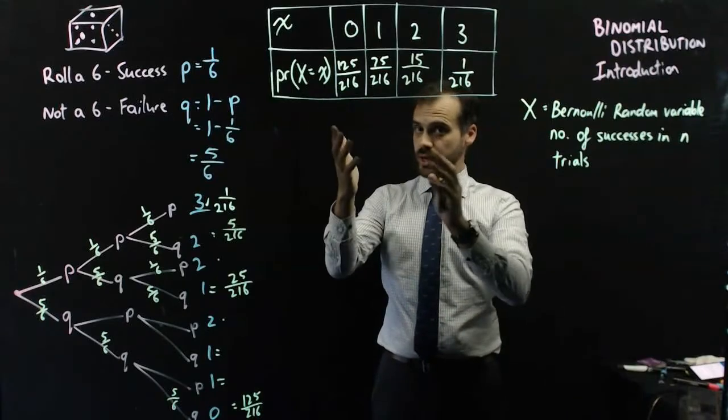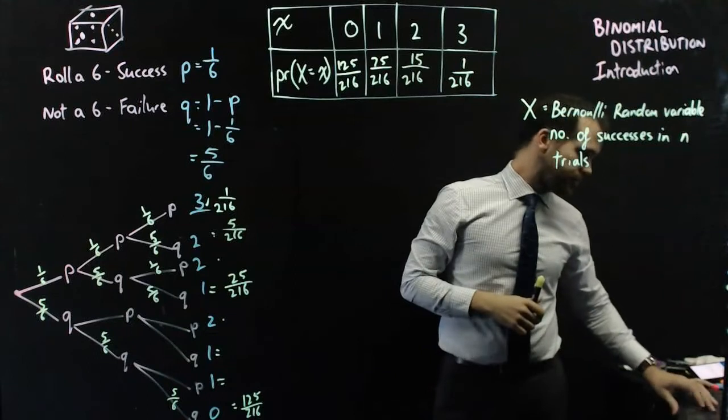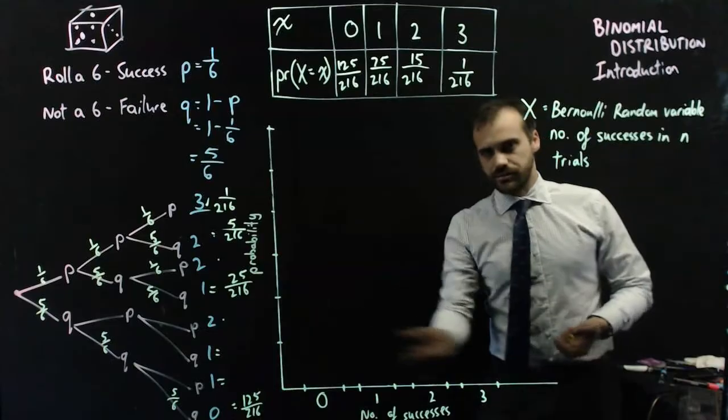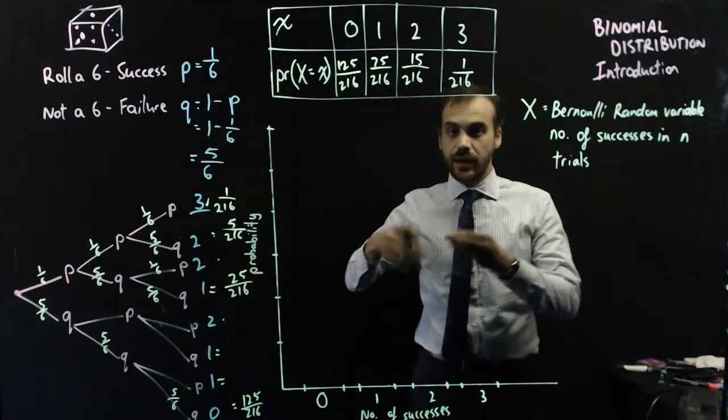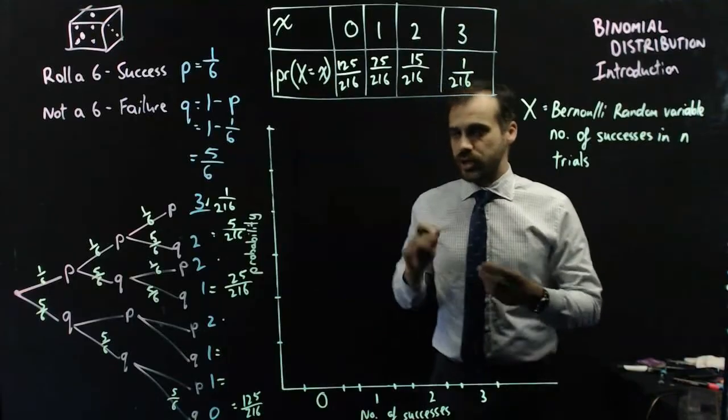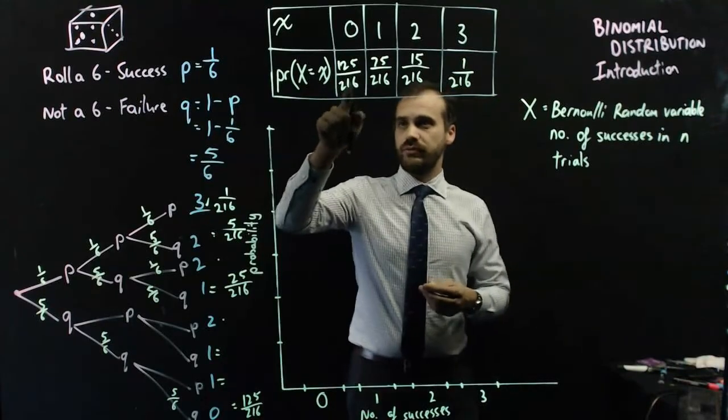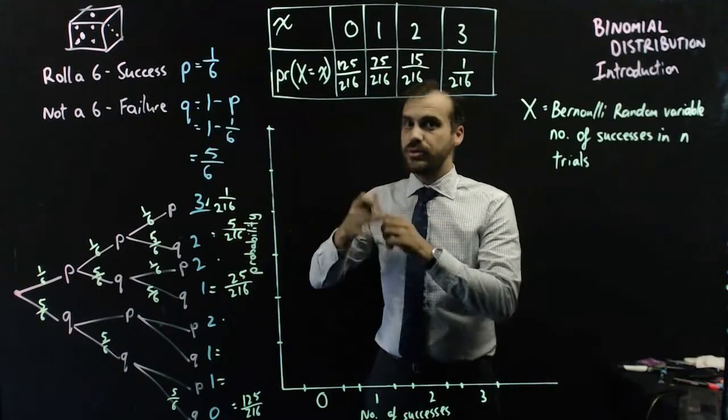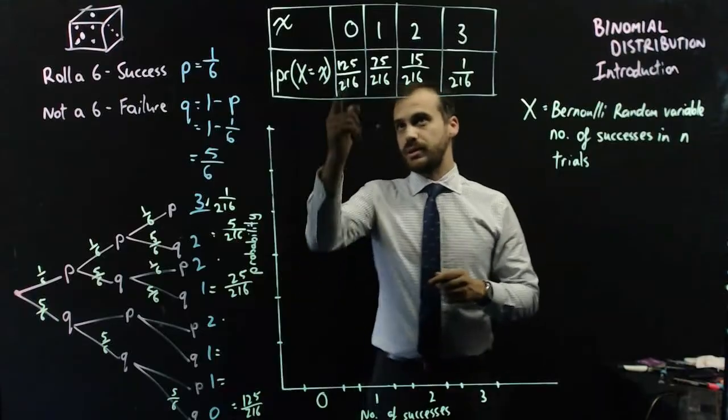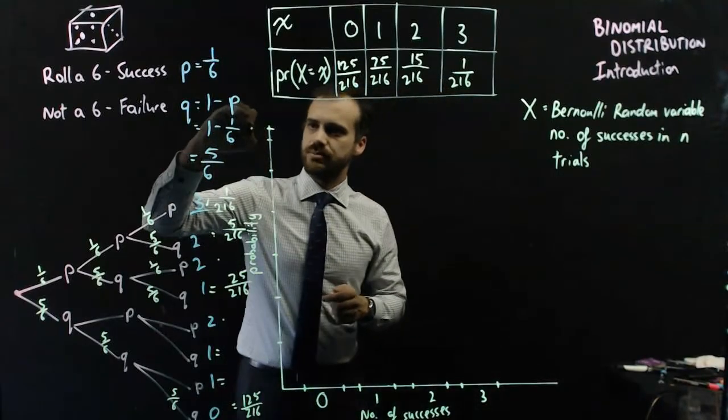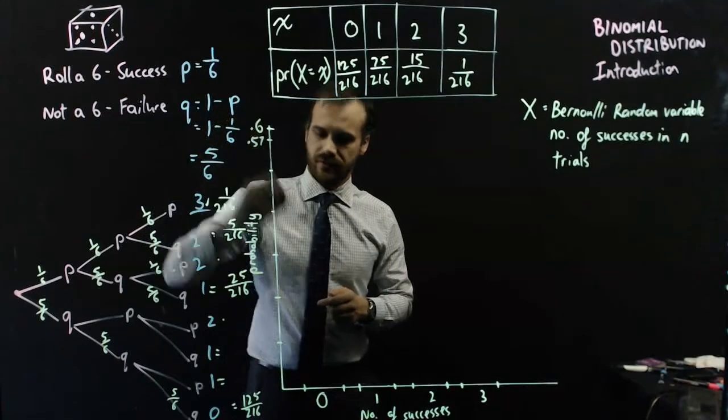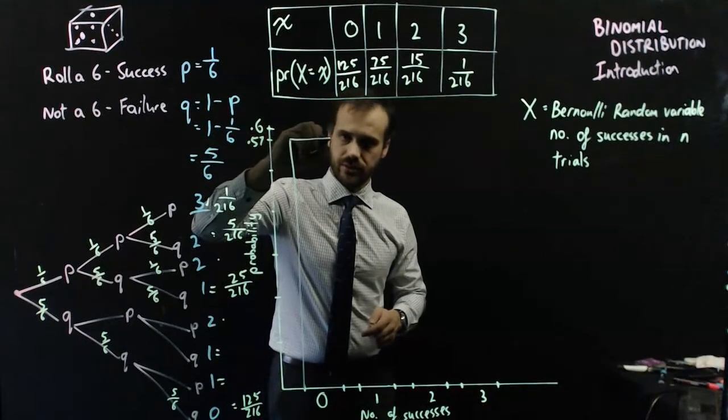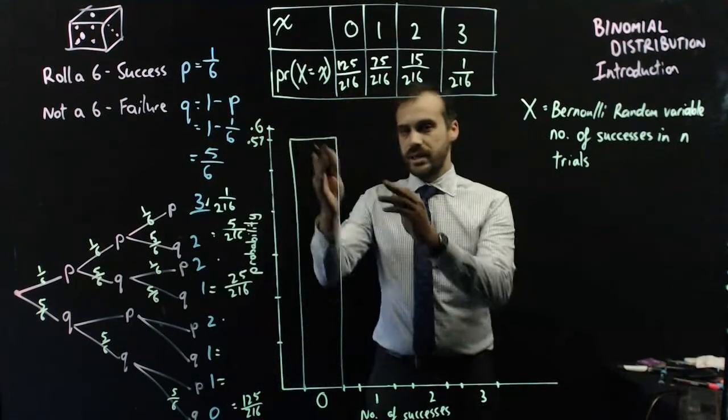We can look at it a slightly different way as well. We're going to use this - number of successes along the bottom, probability of that number of successes happening along the y-axis. 125 over 216, that's the probability of getting 0 sixes from 3 dice rolls. The probability of that happening is about 0.57. So if that's 0.6 up here, this is 0.57 here.